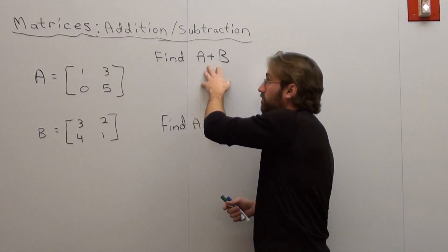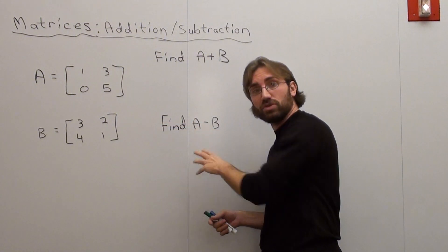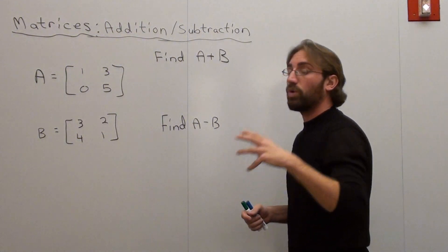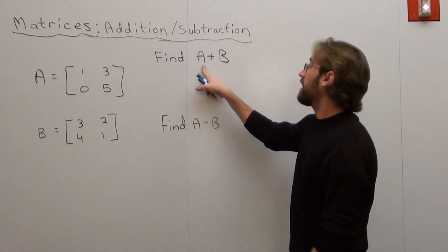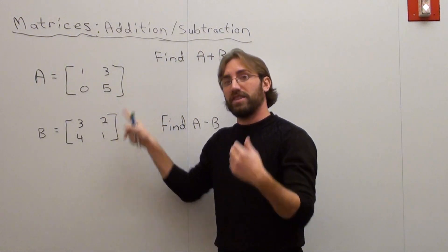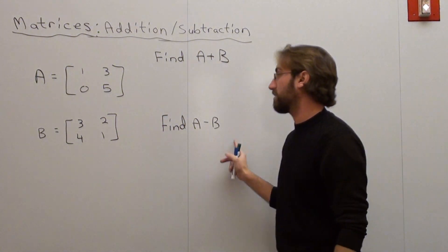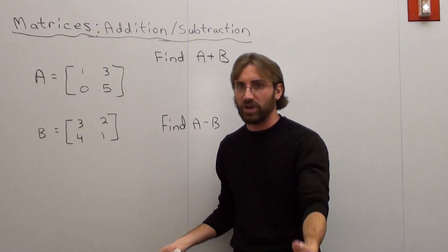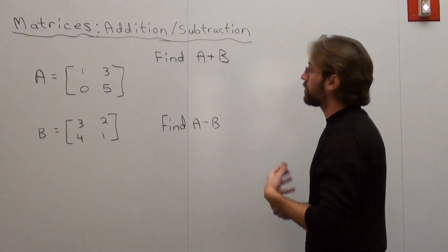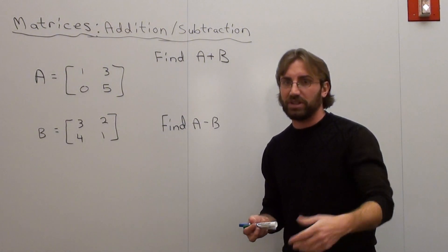So I want to take these two matrices and add them, and I want to take these two matrices and subtract them. What's important to realize is this though: it says find A plus B, so take A, then B. It says find A subtract B, take A, then subtract B. We're going to see what happens here, and it's not terribly difficult.